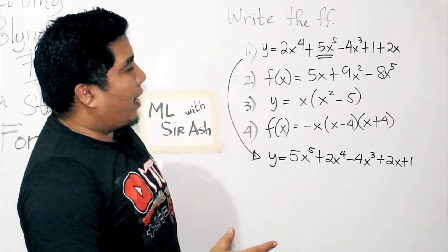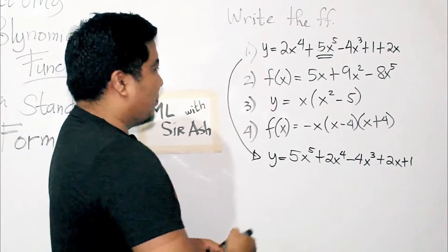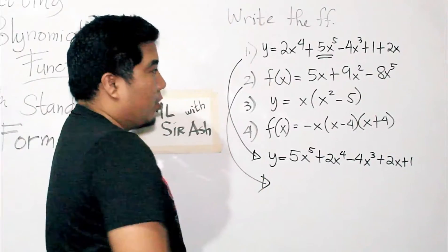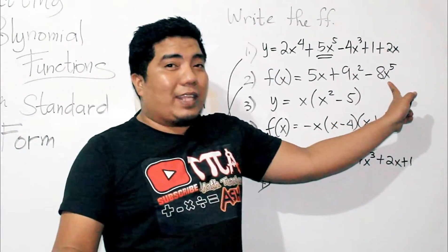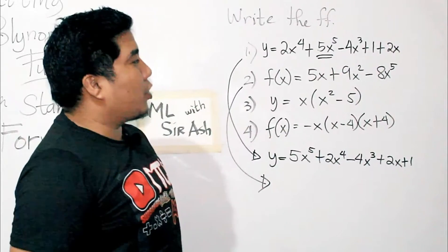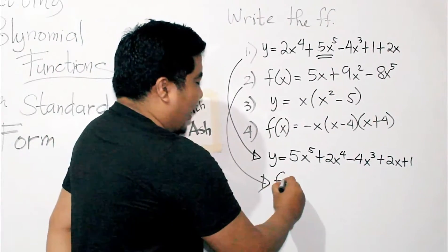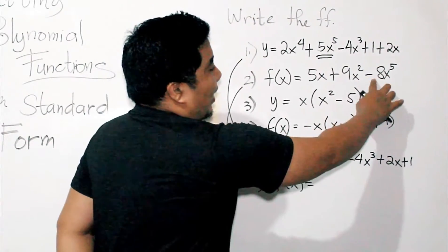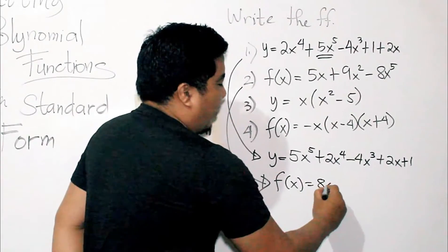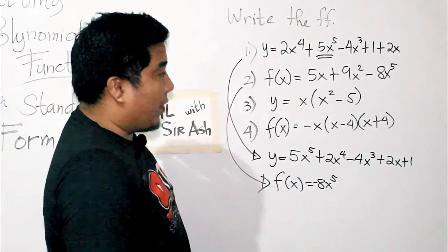f of x is equal to 5x plus 9x squared minus 8x to the power of 5. What is the highest exponent here? Of course, this is still a quintic polynomial function because the degree is 5. So, how do we write that? That is f of x is equal to, what is the sign of this term? That is negative 8x to the power of 5. So, we will write negative 8x to the power of 5.